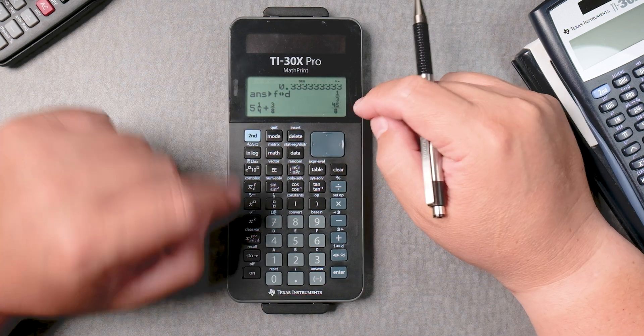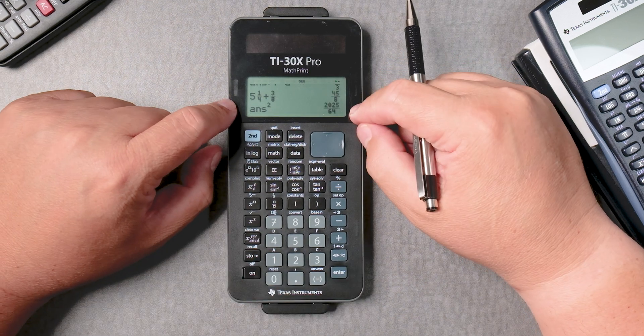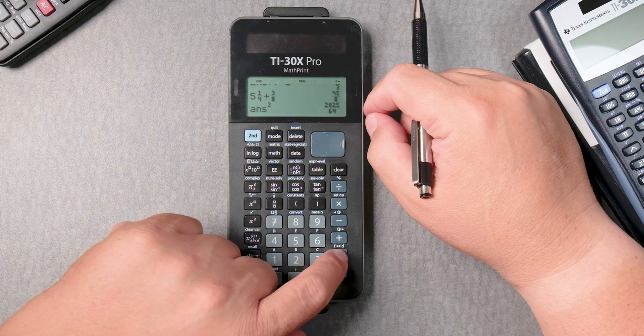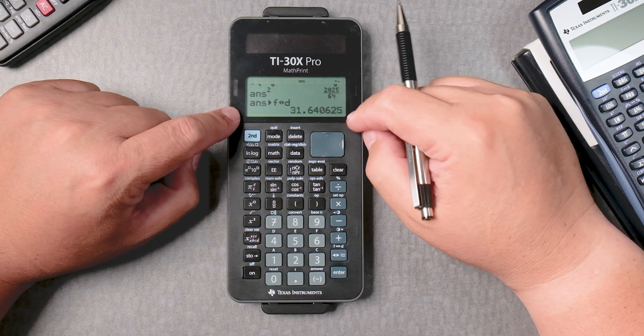Now we can take that answer and square it, and enter it. It gives you a fraction. And you can say 2nd, almost equal, gives you a decimal answer.